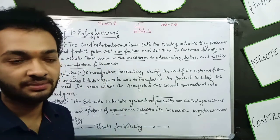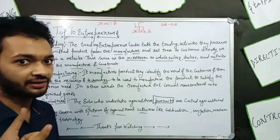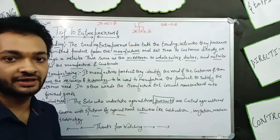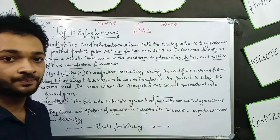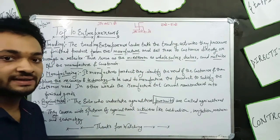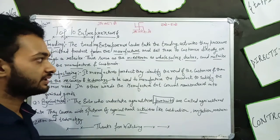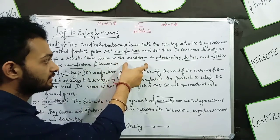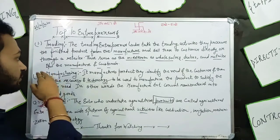Let's first understand their meaning. Let's talk about trading entrepreneurs. As the word suggests, the trading entrepreneur undertakes trading activity. They procure the finished goods from the manufacturer and sell these to the customers directly, or through a retailer. They serve as a middleman — as a wholesaler, dealer, or retailer — between the manufacturer and the customer.